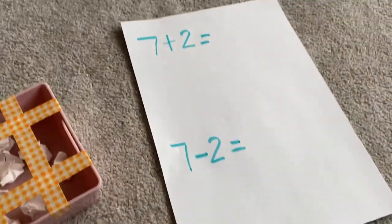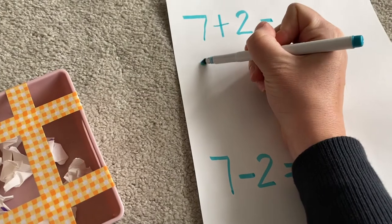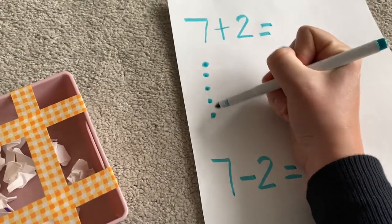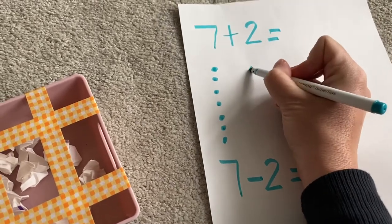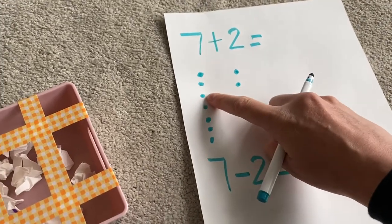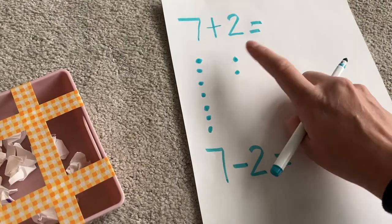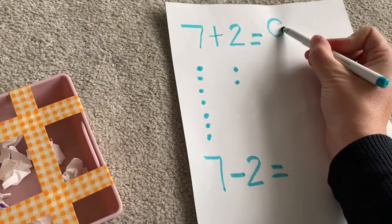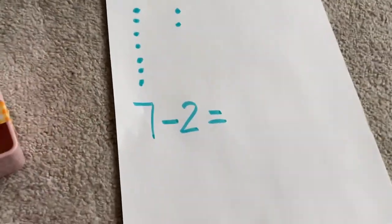Now you could use objects to find out your answer if you'd like to, or another way of doing it is to draw it out. So we've got seven: one, two, three, four, five, six, seven. And then we're going to add two more, so draw two and then count them all up. One, two, three, four, five, six, seven, eight, nine. Remember we're doing that all together, so we have to count all the spots. So seven add two would equal nine.